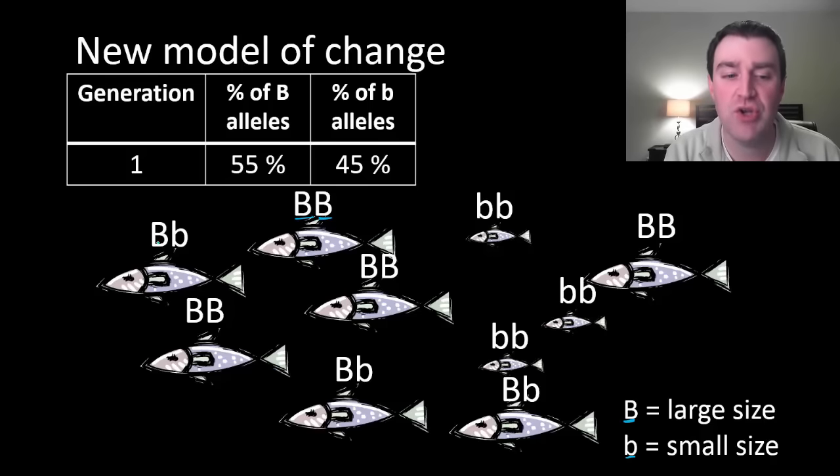If we actually knew all of the genotypes of the organisms in this very small population, then we could actually count all the alleles. If you were to actually pause this video and count every single capital B, you would come up that 55% of the alleles here are dominant and 45% recessive.